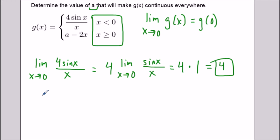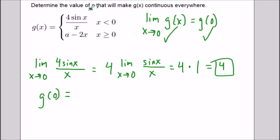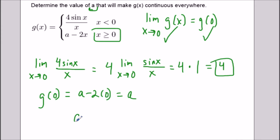We said the limit needs to equal g of zero, so the next thing is to find g of zero. If we replace x with zero we use the bottom component, because g of zero is determined by the interval that includes zero. So g of zero equals a minus two times zero, which equals a. For this function to be continuous everywhere, g of zero which equals a has to equal the limit of four, which tells us the missing value of a is four.